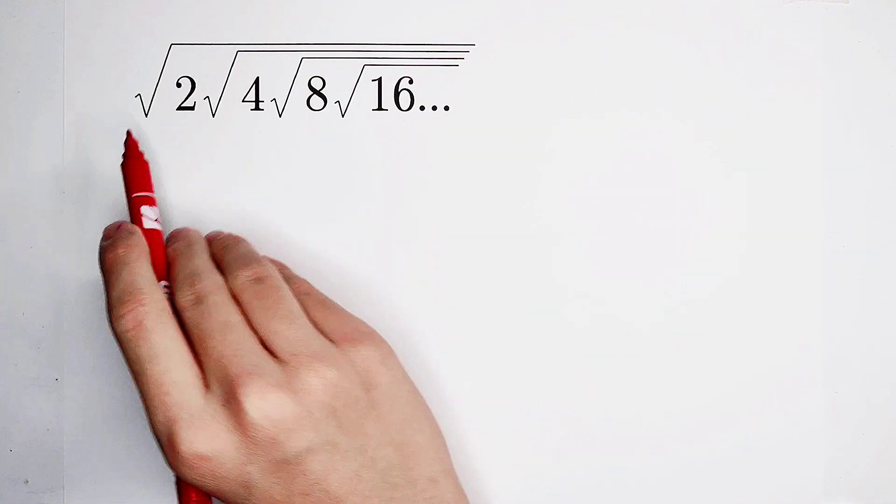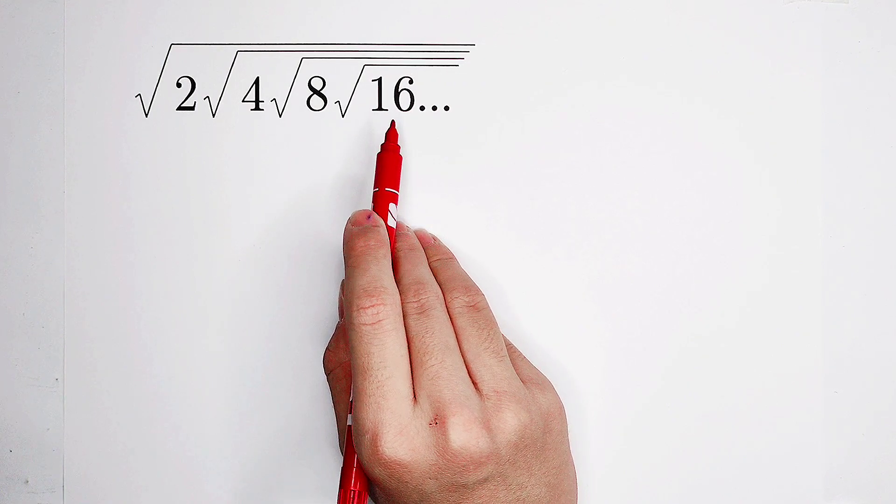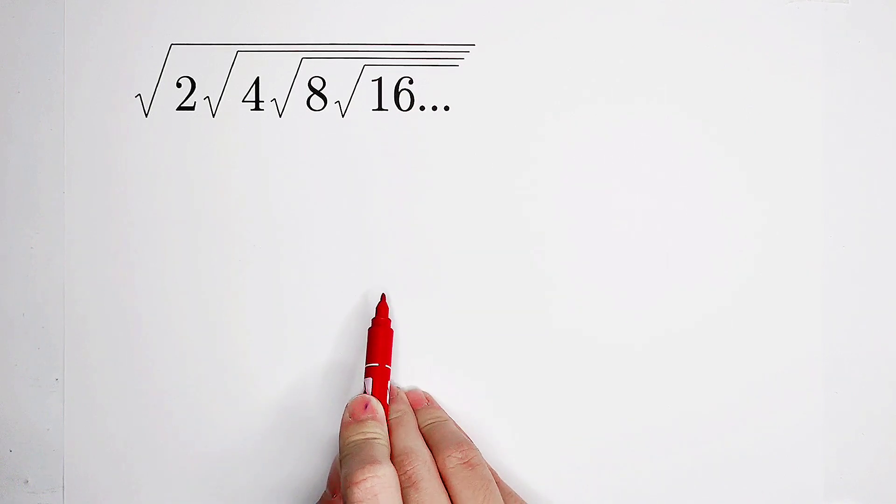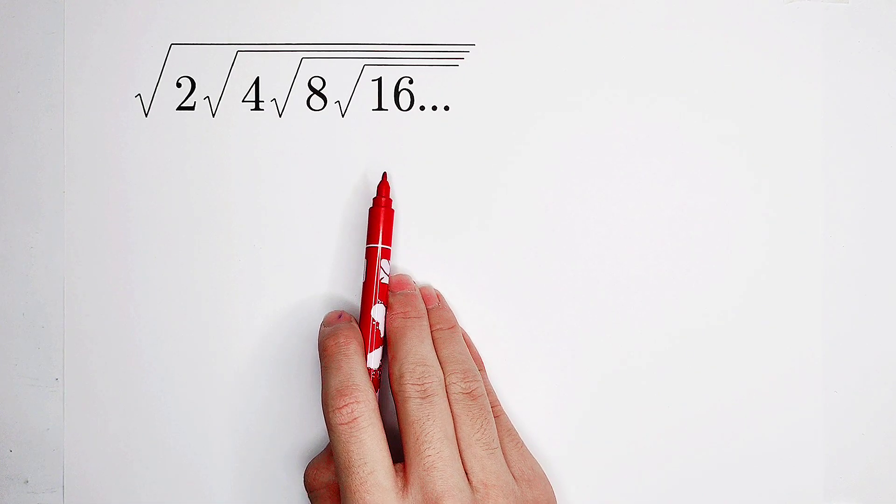Evaluate. Square root of 2 times square root of 4 times square root of 8 times square root of 16, and so on. Endless numbers under endless roots. What shall we do? What have we found out? 2, 4, 8, 16. They are the numbers.